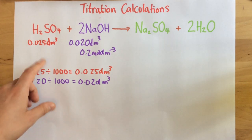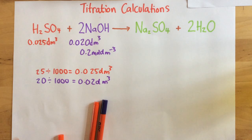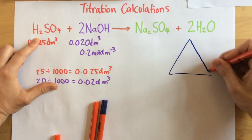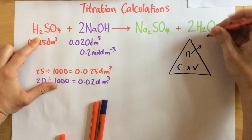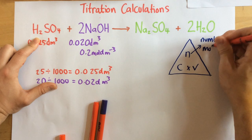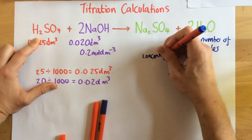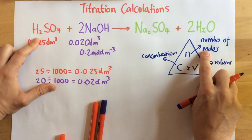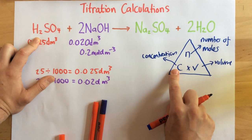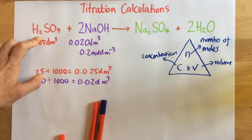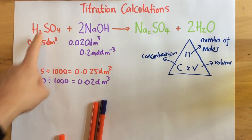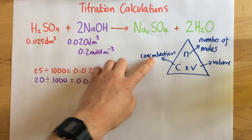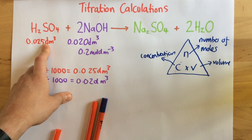Now I'm going to use this equation triangle: N = C × V, where N is number of moles, C is concentration, and V is volume. The number of moles is just the number of molecules reacting within a particular experiment. I have the concentration and volume for the sodium hydroxide. The reason I can't find the concentration of the acid yet is that to use the equation triangle I need two of the three parts, and at the moment I only have the volume for the acid, so I need to find the number of moles first.